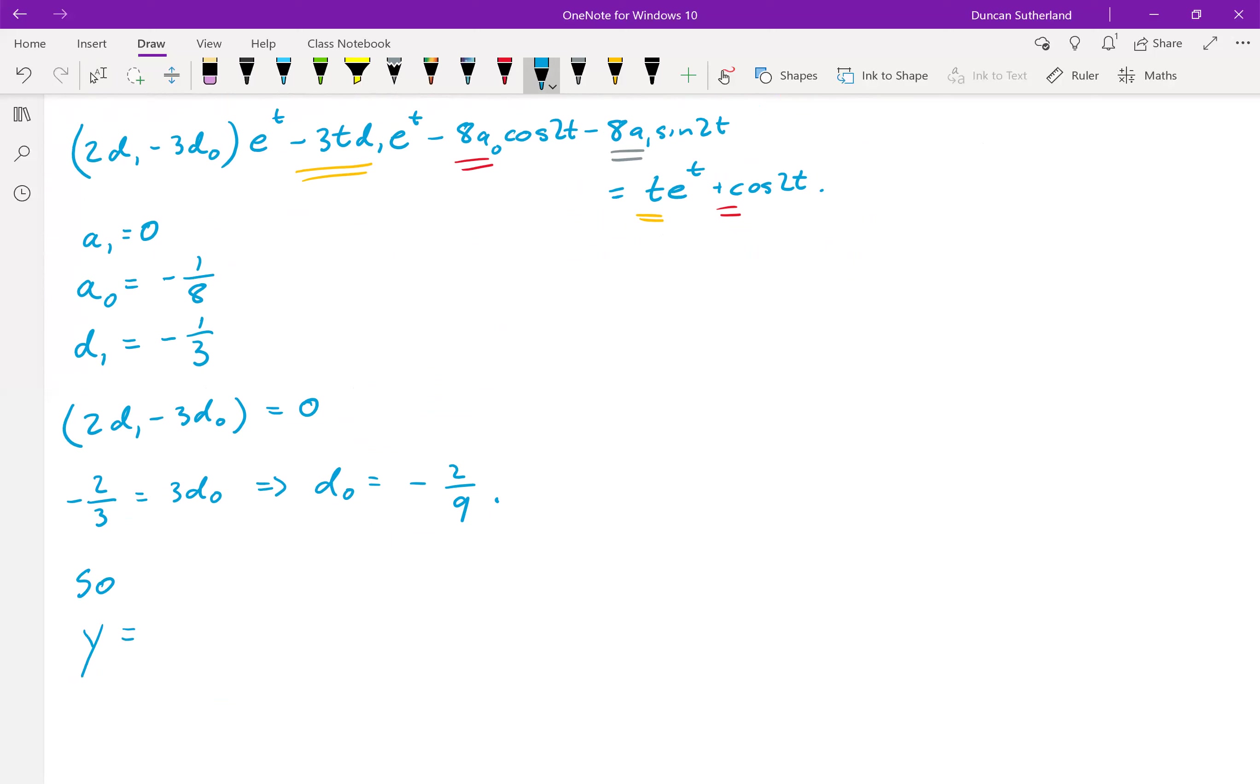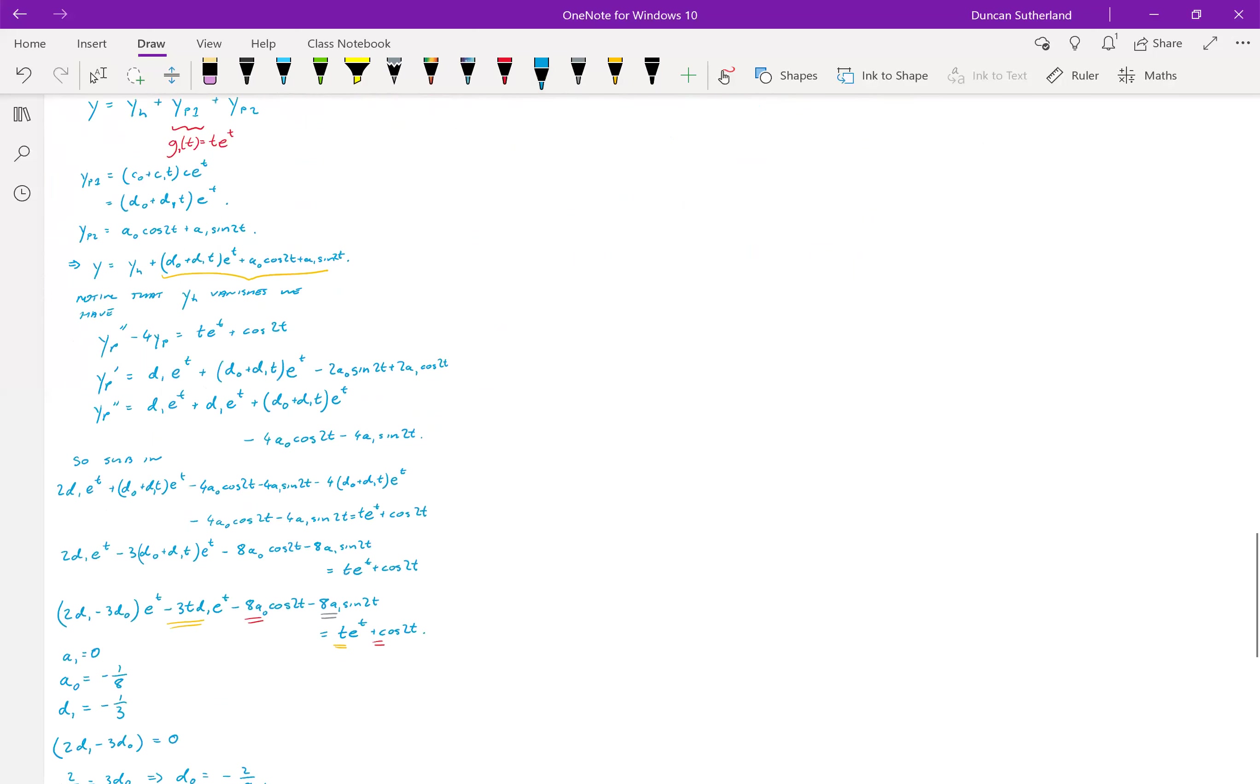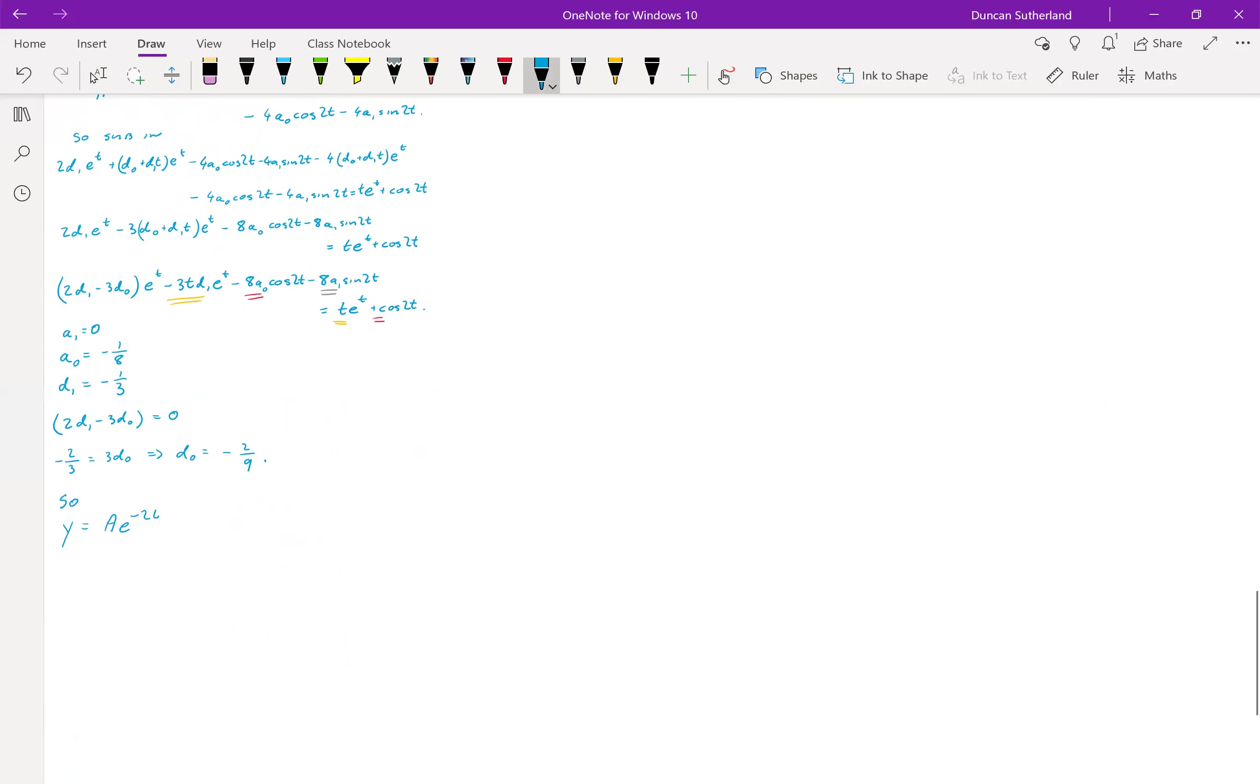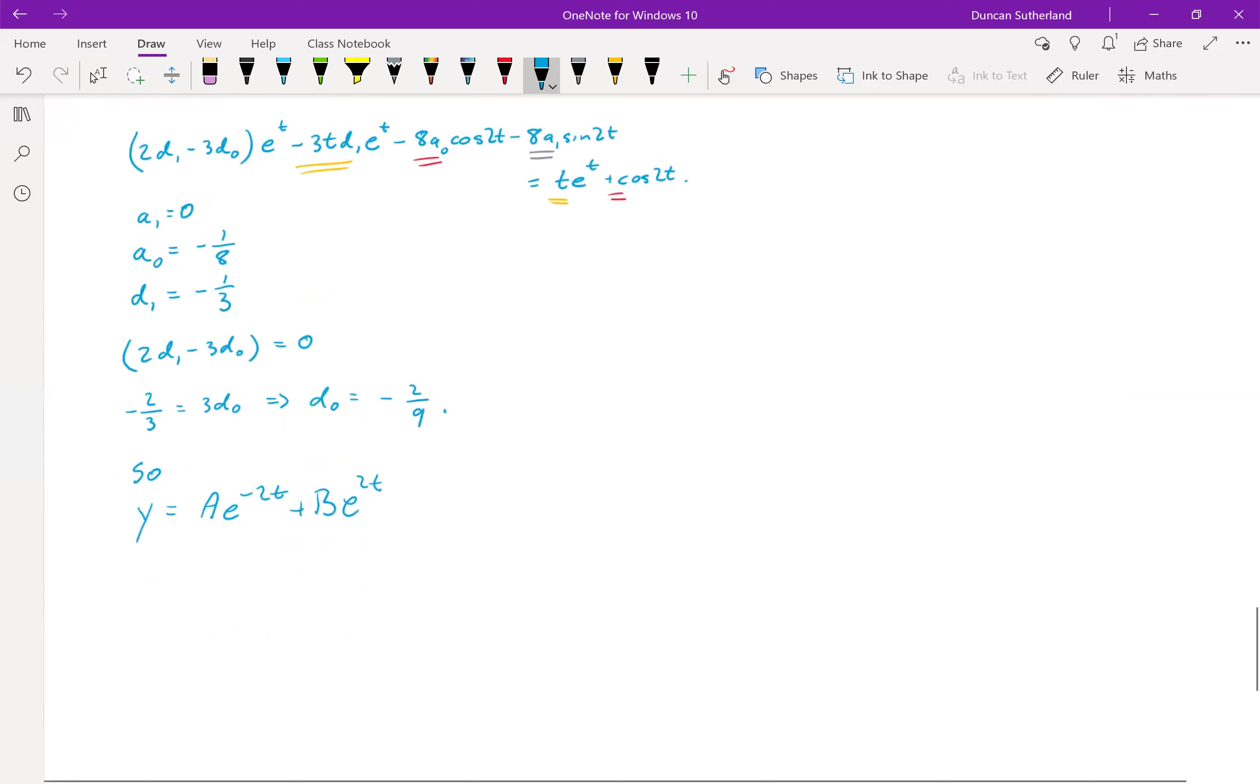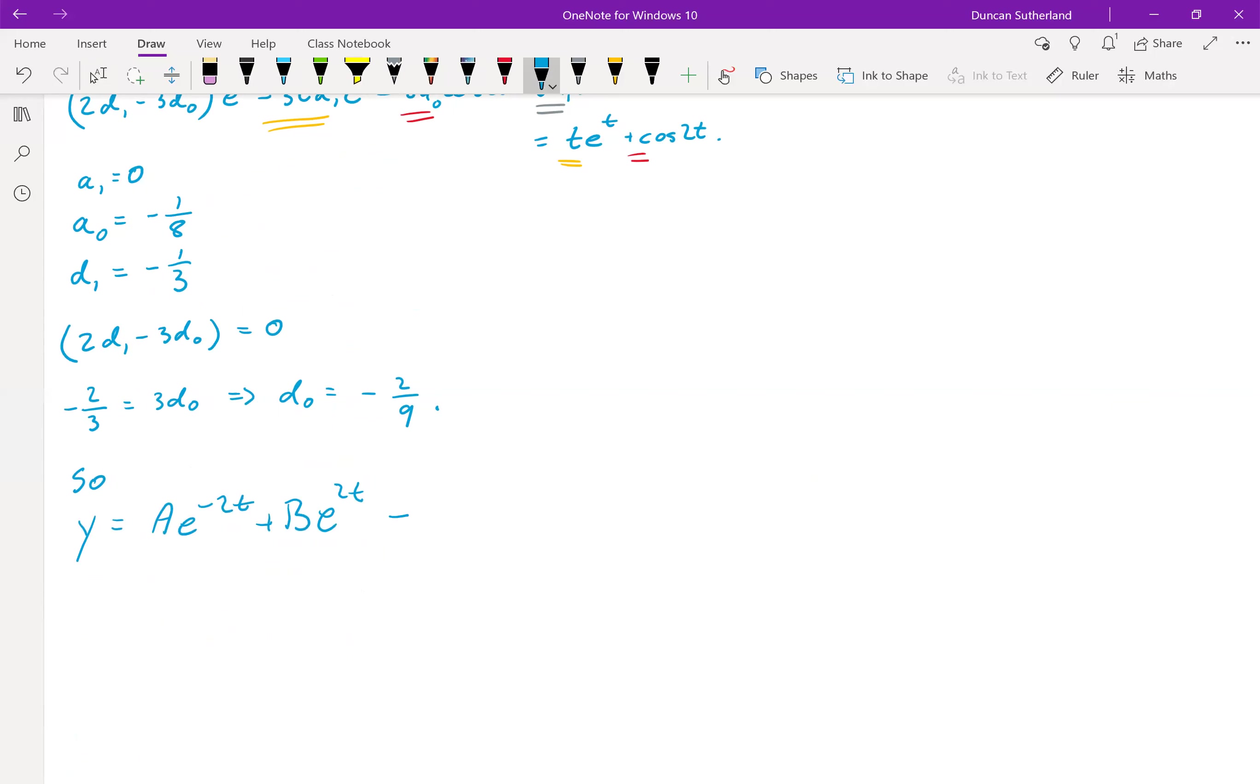So, y equals the homogeneous part, which was a e to the, where did I do my homogeneous part? Minus 2t plus b e to the 2t. All right, minus 2 over 9 minus t over 3. I'm going to take the minus sign outside some brackets. And then my last one is this, is this cosine term that's got the minus 1 eighth. That's the general solution in this case. I don't have any initial conditions, so I can't sub in for them. I can't find my capital A and B, so I stop there.